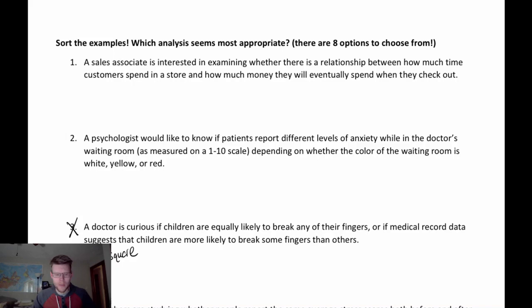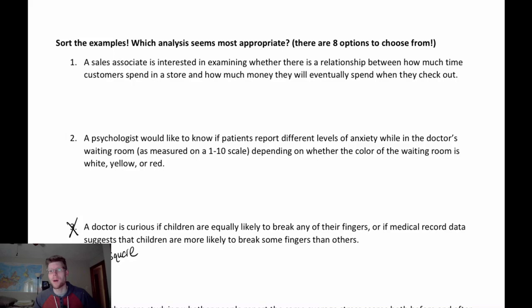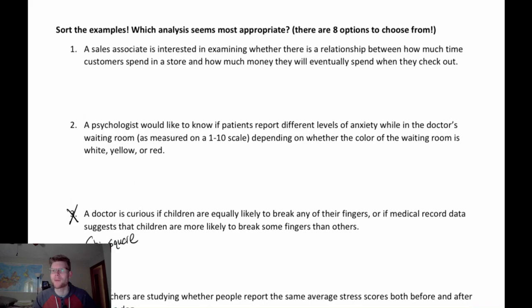A couple of these problems involve chi-square testing, which we skipped this semester, so I won't be bothering with those — that would be problems three and six. But problems one, two, four, five, and seven would be relevant to things that we've talked about this semester.